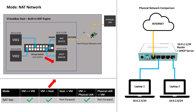Moving on to the next network mode, let's look at NAT networks. This mode is similar to the NAT mode we just discussed — it uses a virtual NAT device to route traffic between the inside and outside networks using IP address 10.0.2.1, and a separate DHCP server to provide VMs with IP addresses running on 10.0.2.3. One big difference with the NAT network mode is that a virtual switch has been included that all the VMs are connected to. Looking at the table below, by including this virtual switch, the VMs can now communicate with each other as well as external network devices on your LAN and the internet.